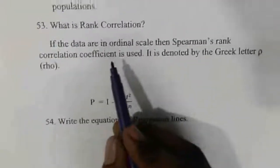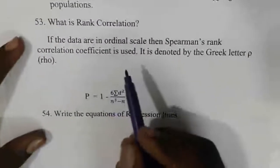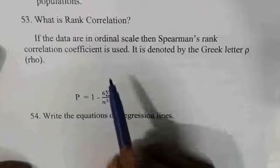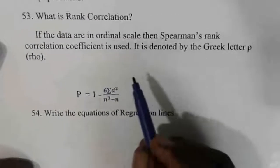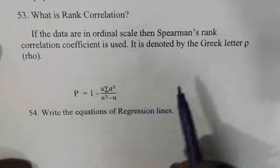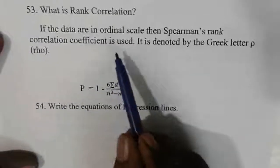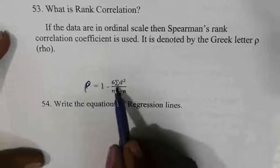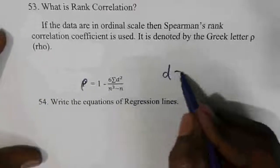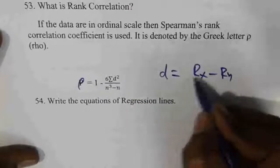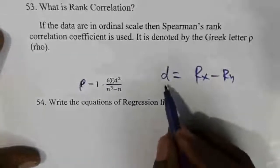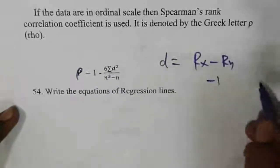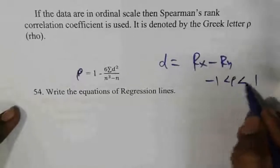Rank correlation: in this method, we rank the data values. The difference between two ranks is called d. Find d-squared and apply the rank correlation formula. The correlation value always lies between minus one and plus one.